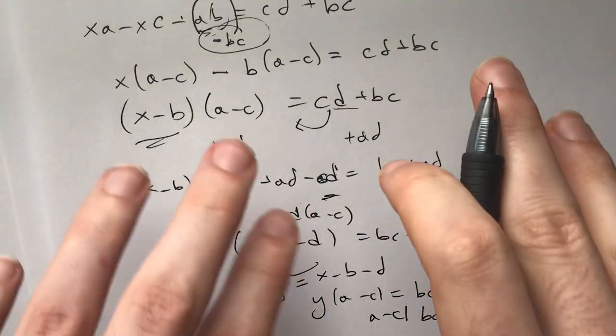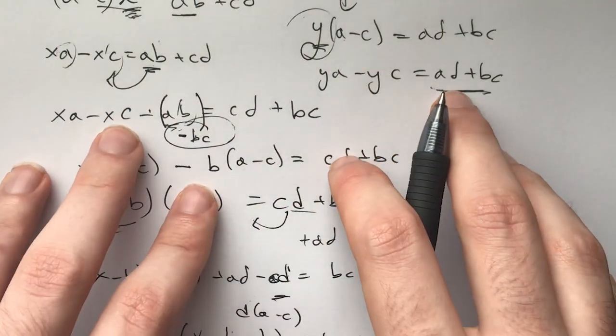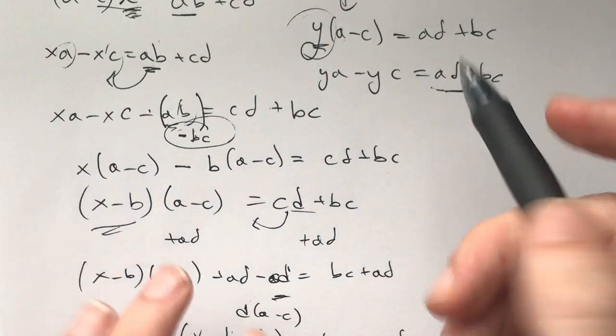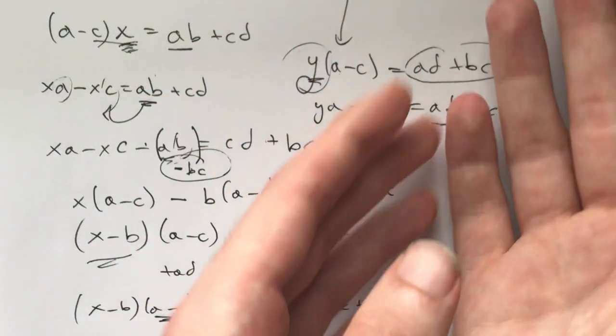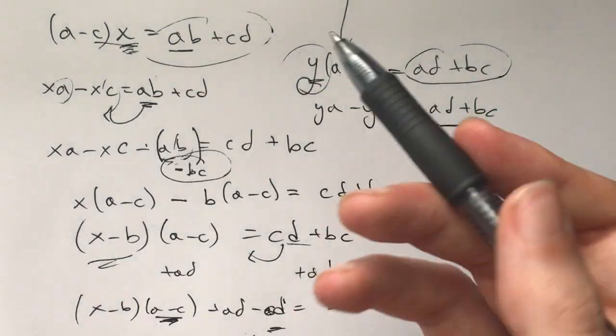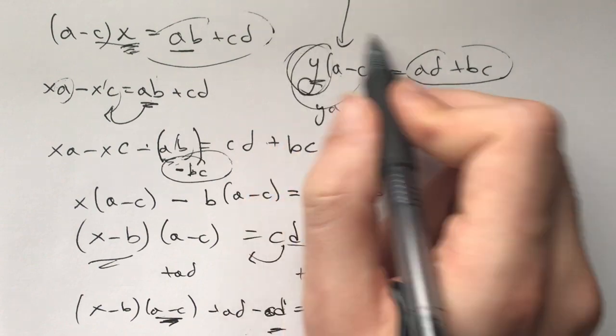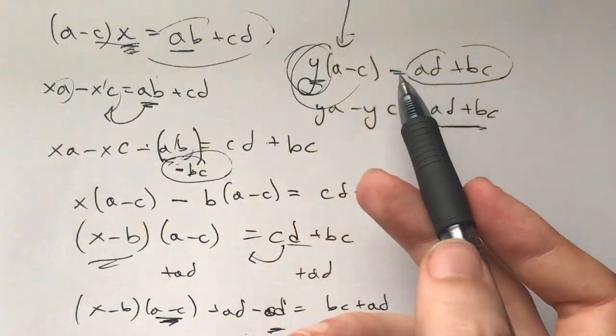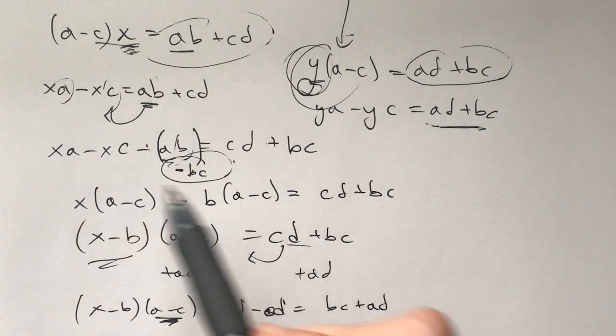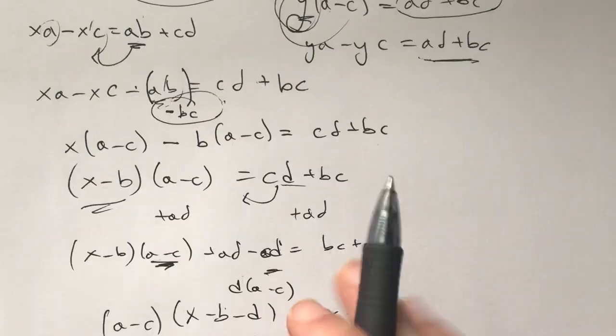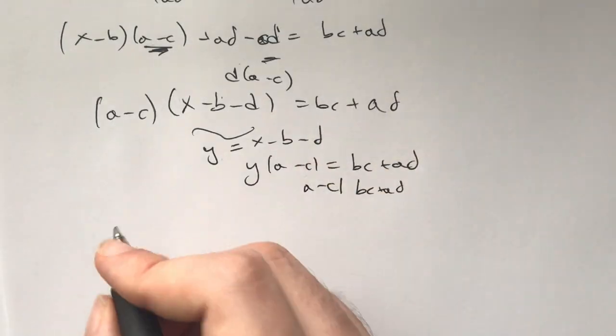Now this is one method. There's not really any big structure, it's just I need to have this on this side so I add it. I need to get rid of these and the only way I can get rid of it is to incorporate it into this y times (a-c). To do that I move it on the other side. But there's a different way of solving this as well.